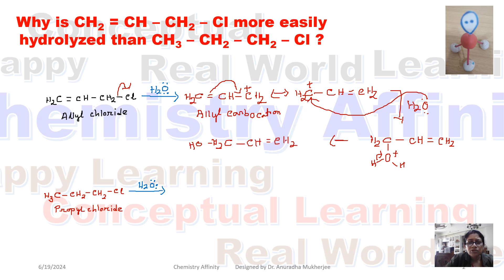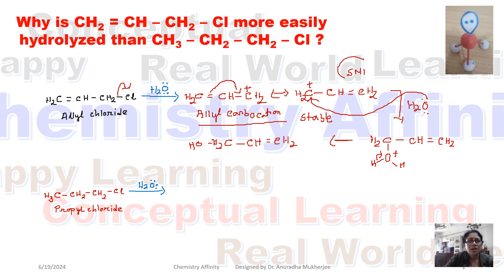This reaction proceeds via the allyl carbocation, which is a very stable carbocation, so the reaction will be faster. Now for the next compound, propyl chloride, the carbon-chlorine bond breaks.